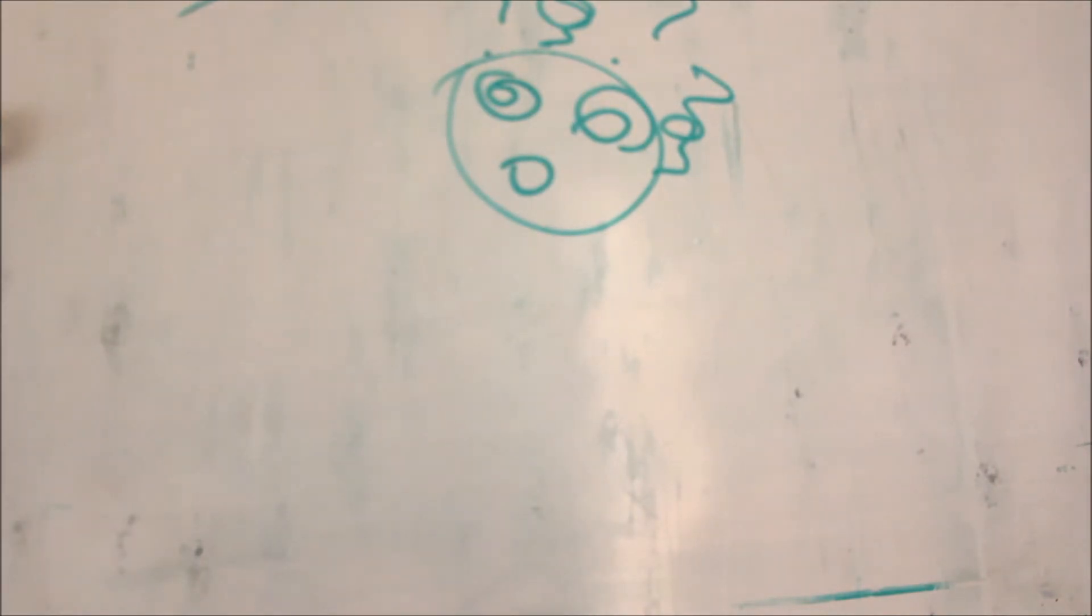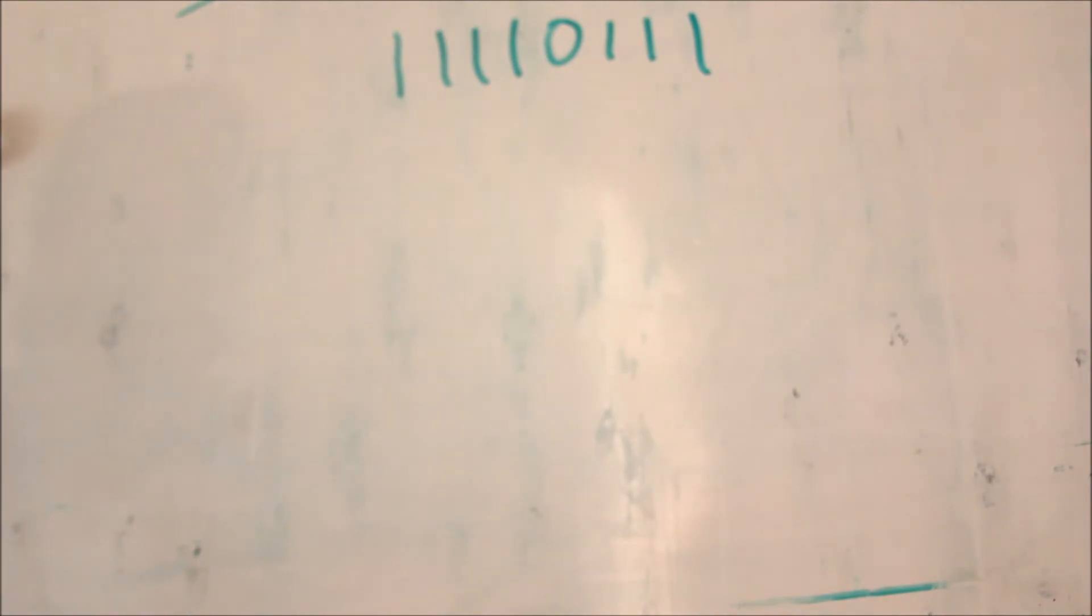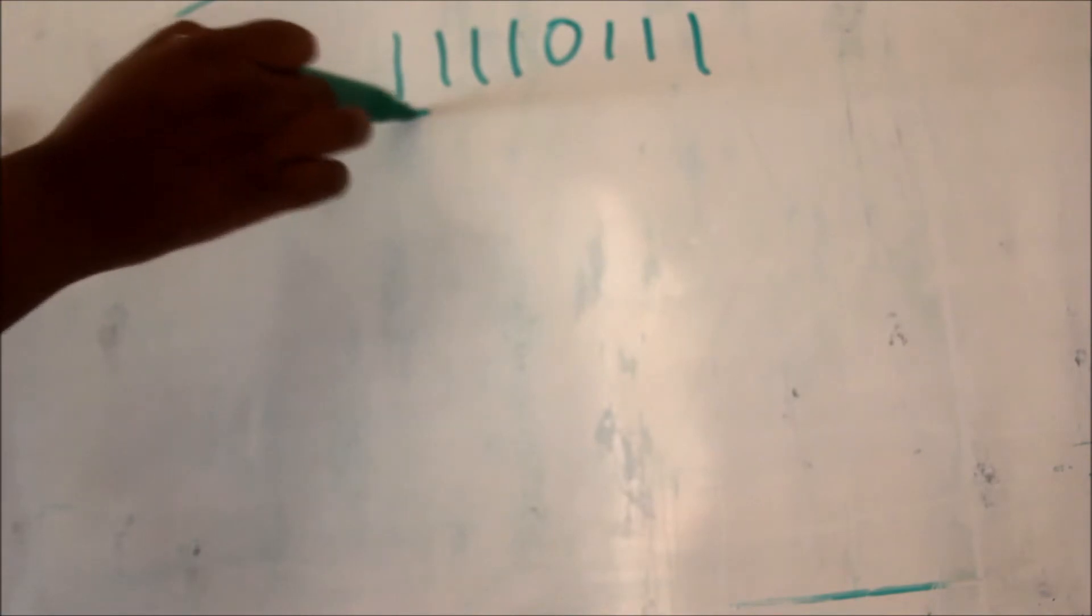So, first you take the number that is in 2's complement. So, let's get a number here. So, you have this number, and you identify whether it is positive or negative. So, you look at it, there's a 1 at the front, so it's negative.